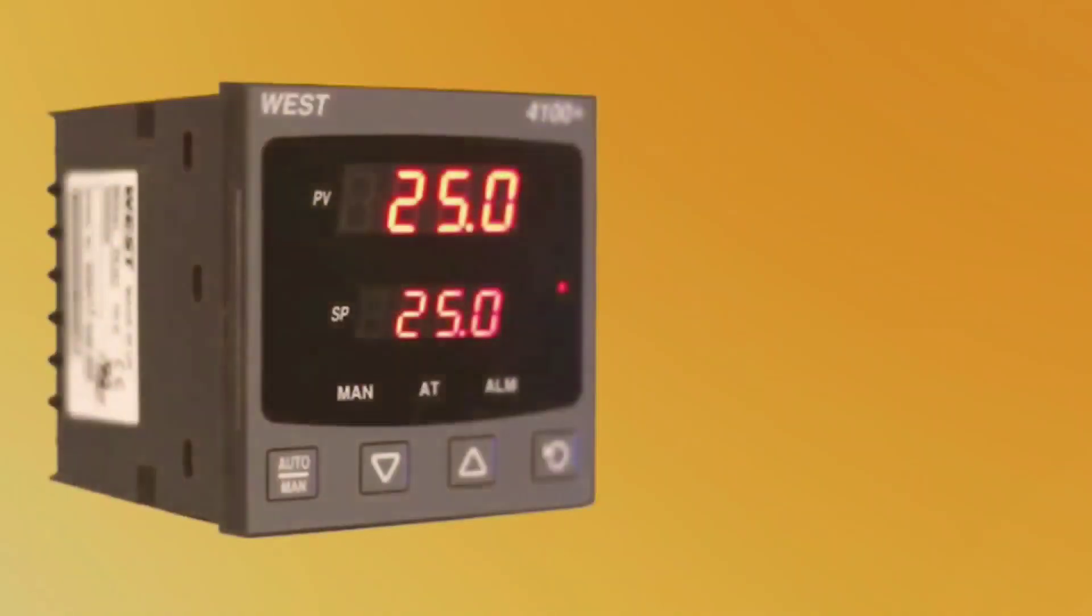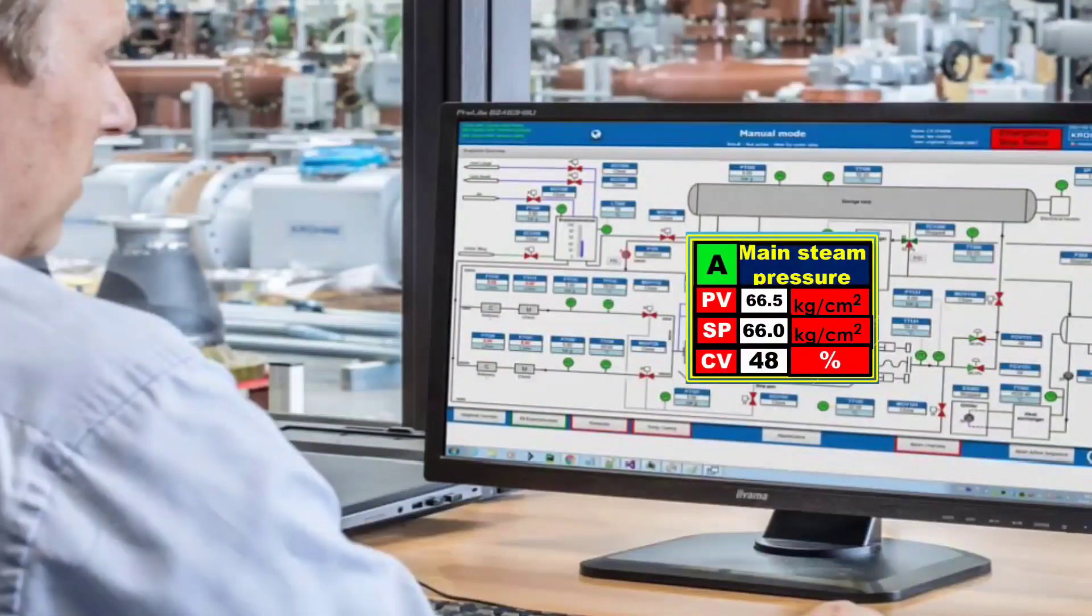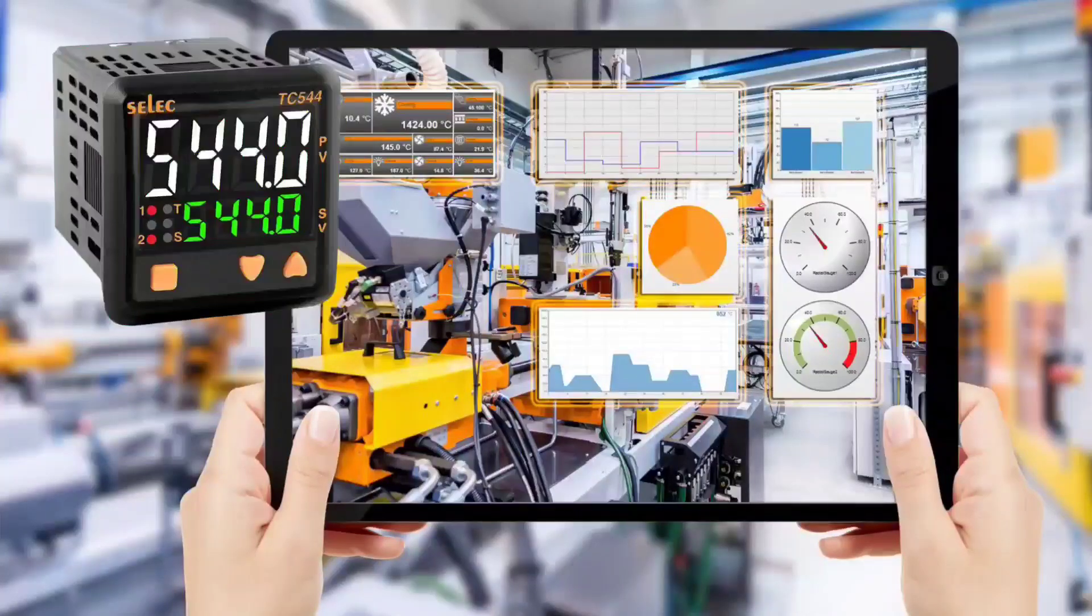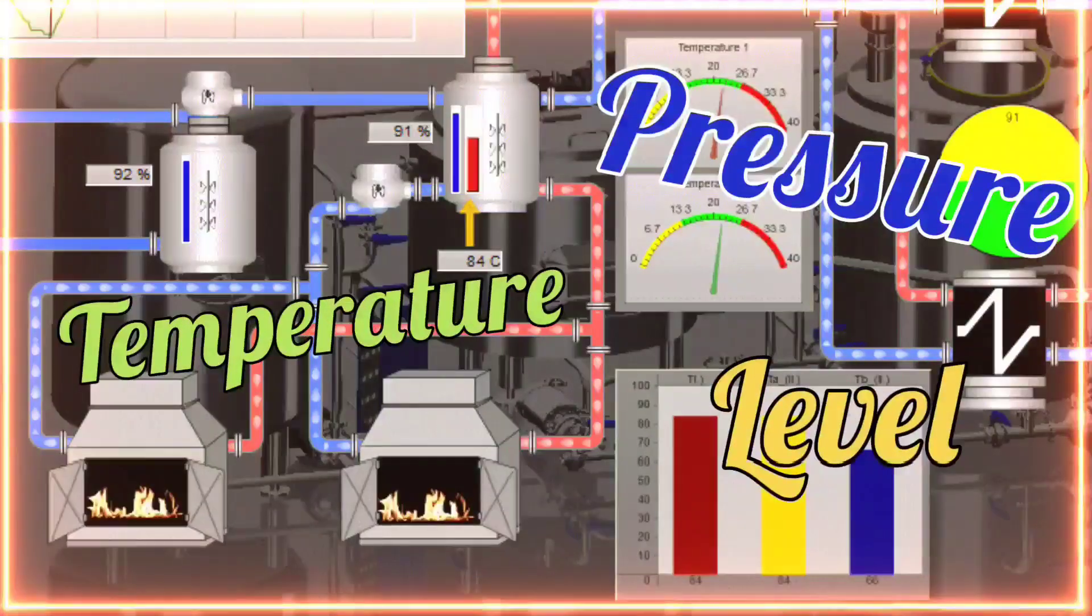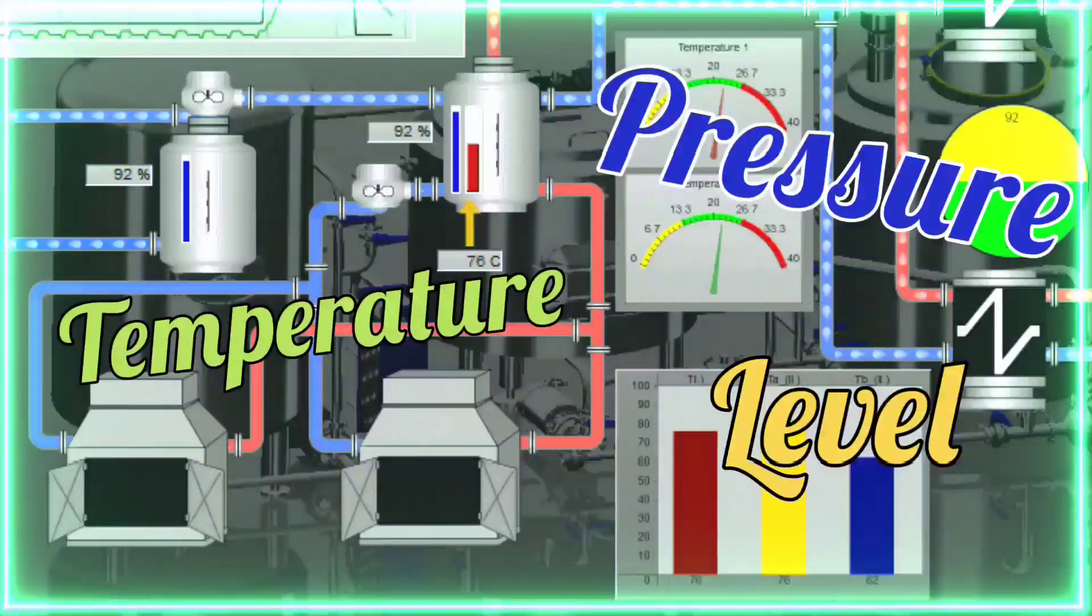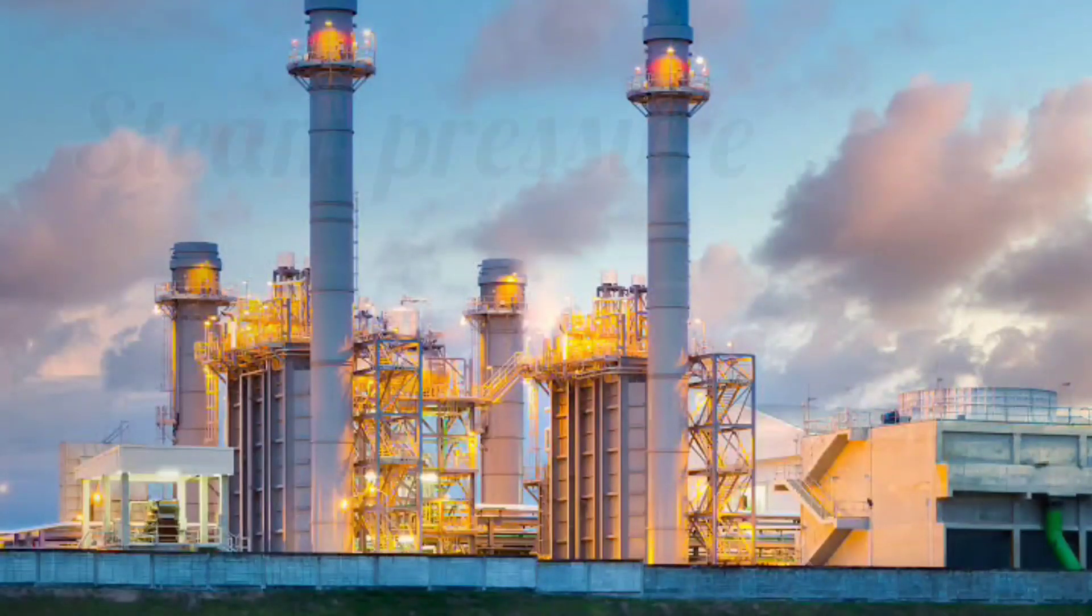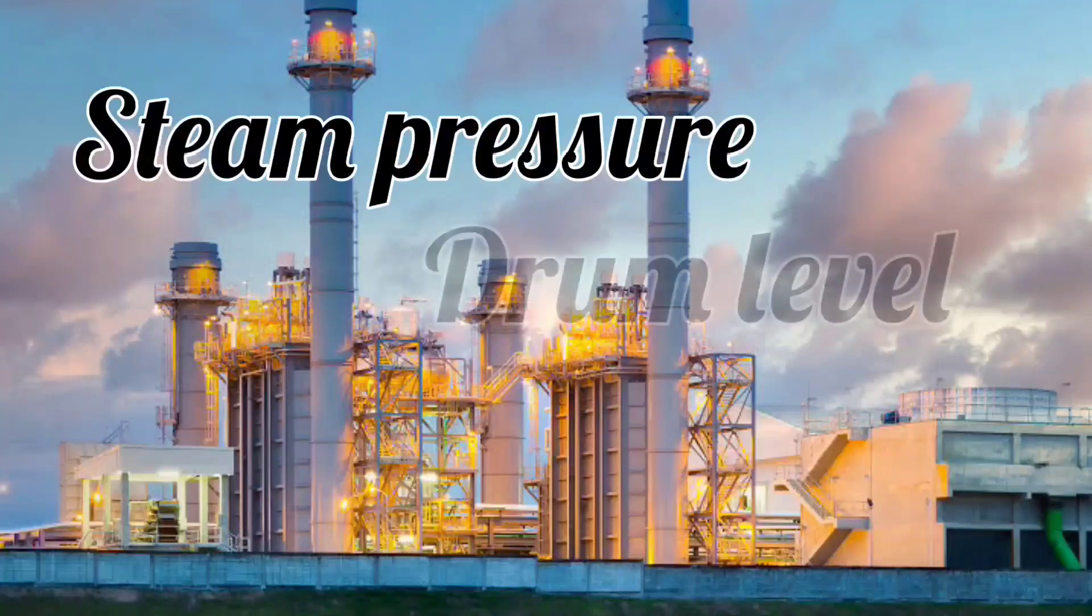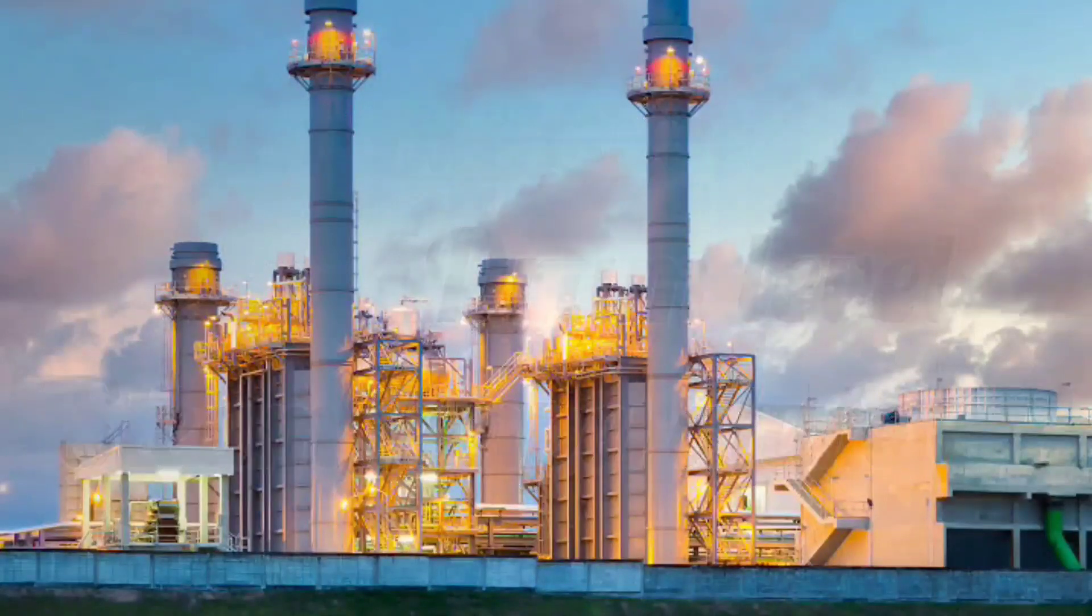PID controller is inbuilt in SCADA or is used separately. PID controllers maintain the parameters at the set point. By using this, the pressure, temperature, level you need is maintained at set parameters. Any parameter such as boiler steam pressure, steam drum level, steam temperature is controlled by PID controller.